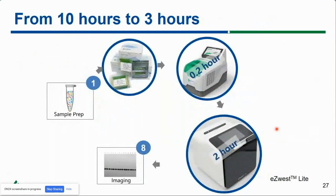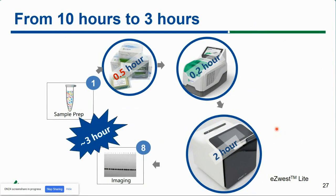Now with the precast gels, we can cut the separation time to about half an hour. Summing everything together, it seems like we were able to get the whole Western blot process done in about three hours — a much welcome improvement from the 10 hours you used to have to spend in the lab.